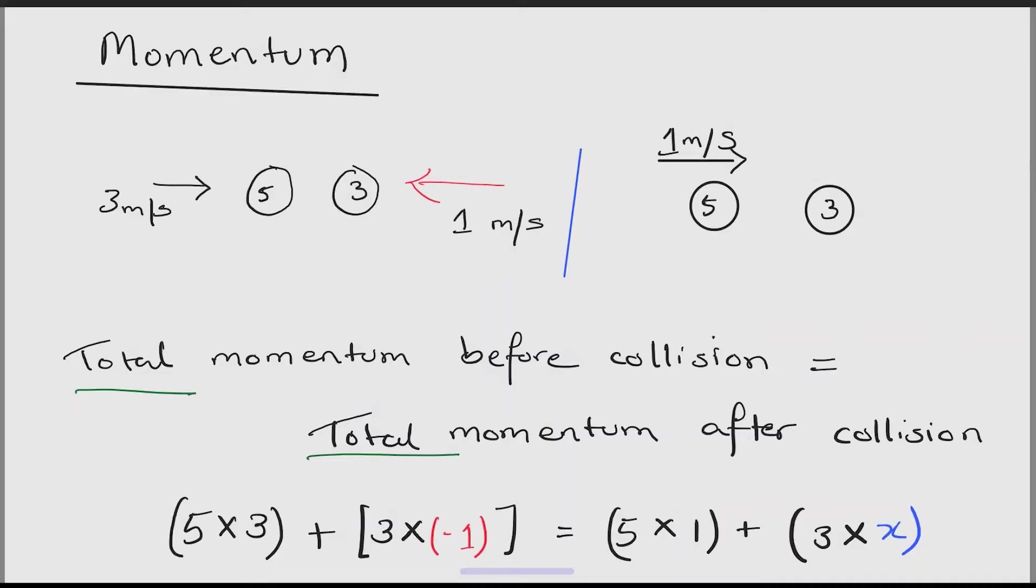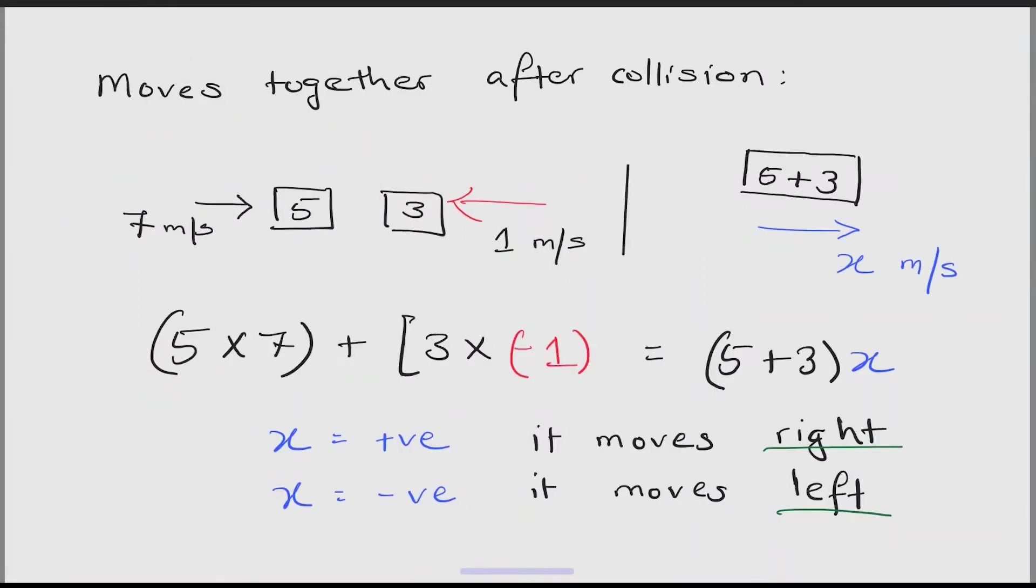In momentum you have to remember the total momentum before collision equals the total momentum after collision. You also have to remember if an object is coming from a different direction we have to use a negative sign to denote that. Here you can see the object coming to the left is given a negative sign and the object coming to the right is given a positive sign.